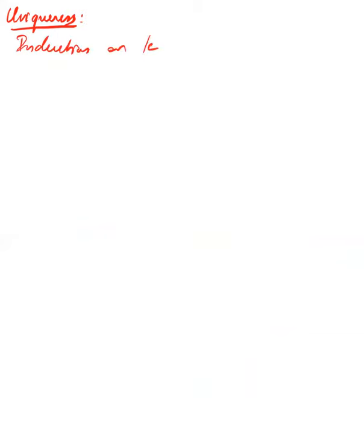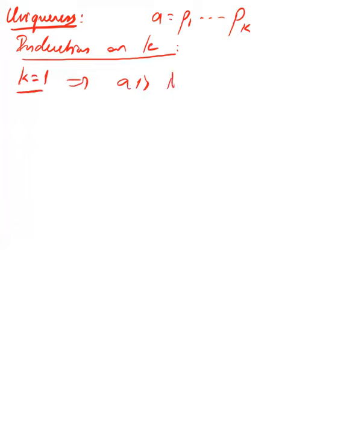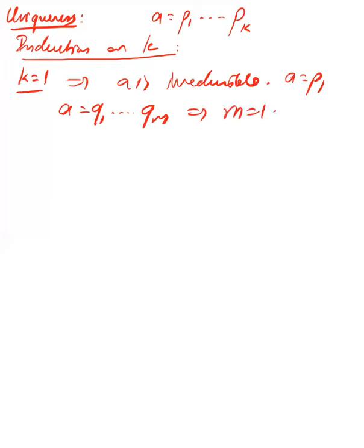We use induction on k, where we wrote a as a product of k prime elements. If k equals 1, then a is irreducible, so a equals p₁. If you write another way as q₁···qₘ, then since a is irreducible m must equal 1, so p₁ equals q₁. That's uniqueness for the base case.